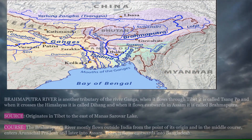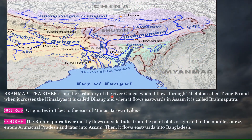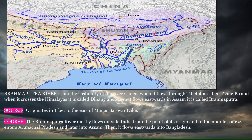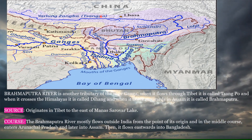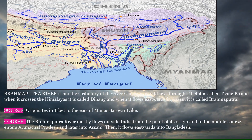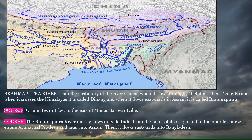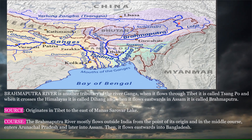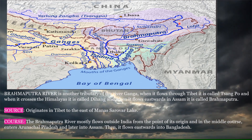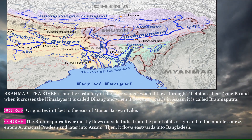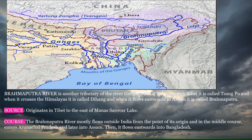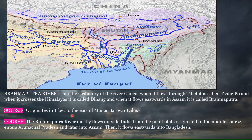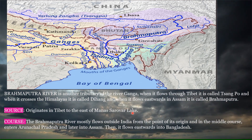The Brahmaputra is another tributary of the river Ganga system. When it flows through Tibet it is called Sangpo; when it crosses the Himalayas it is called Dihang; and when it flows eastward through Assam it is called Brahmaputra. It originates in Tibet to the east of Manasarovar Lake.